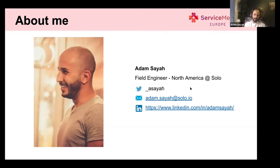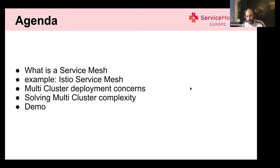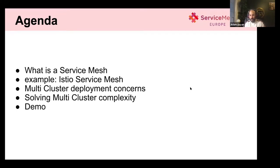Feel free to reach me out if you have any questions or just to have a conversation. So the agenda today: we're gonna talk first about service mesh, the origins of it, just as an introduction. Then we're gonna take an example of a service mesh — in this case, Istio. Then we'll talk about multi-cluster deployment and what concerns we have with it, how to solve the complexity that comes with multi-cluster service mesh, and at the end we'll finish with a demo.